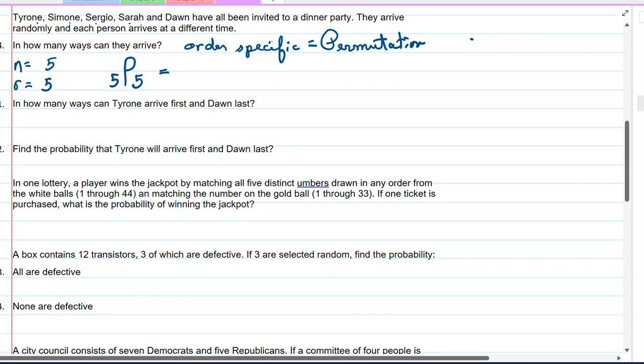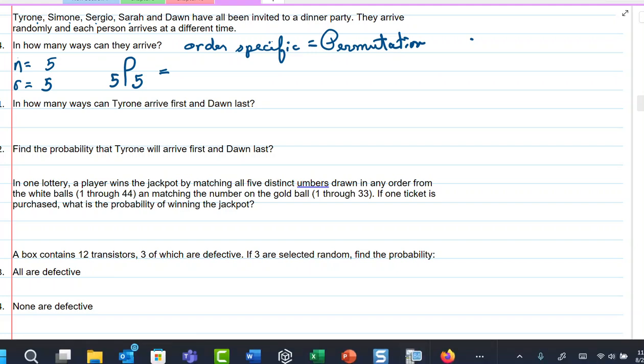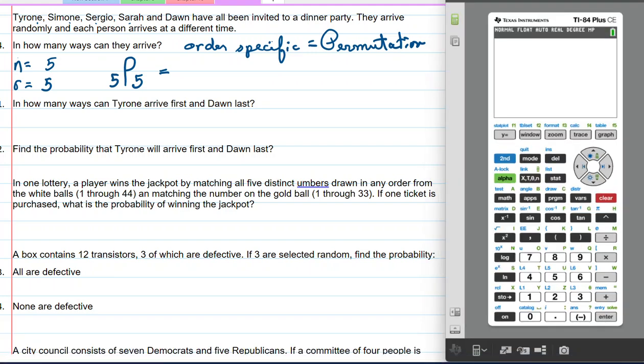So we're talking about 5P5. Now we know this as 120 because we've done so many. But we're going to definitely review the calculator. We're going to put 5, math, PROB, enter the 5 and enter. And there's 120 ways for these 5 people to arrive at the party.